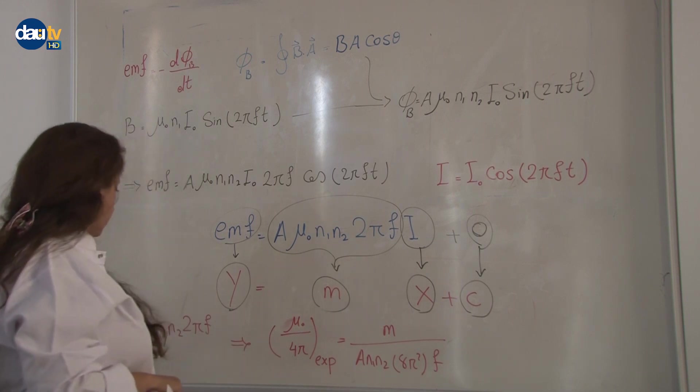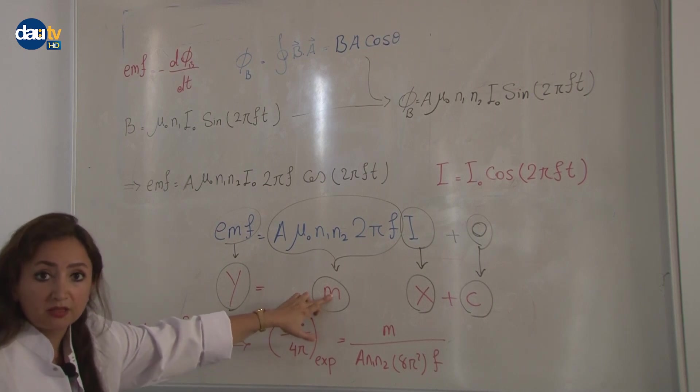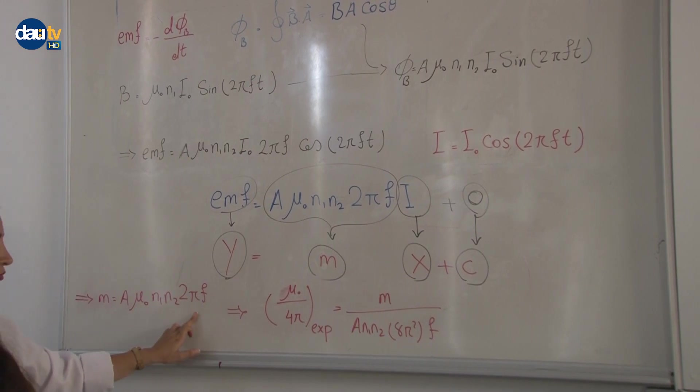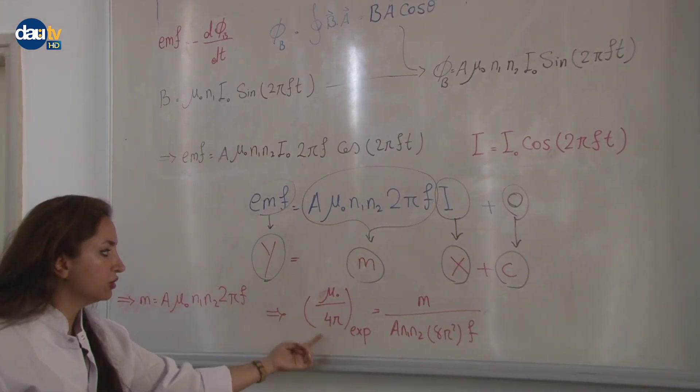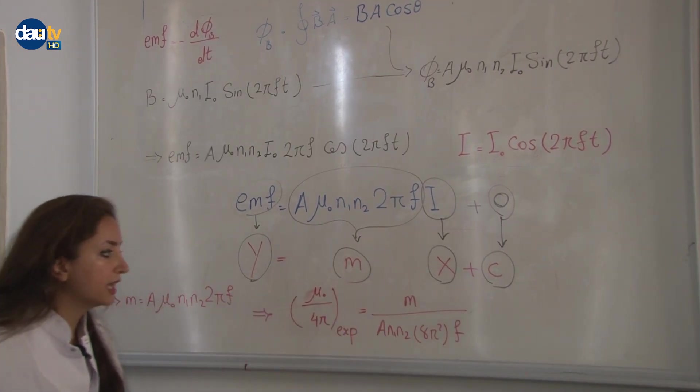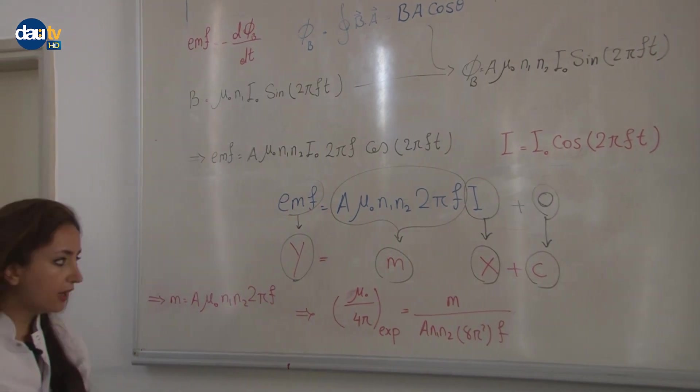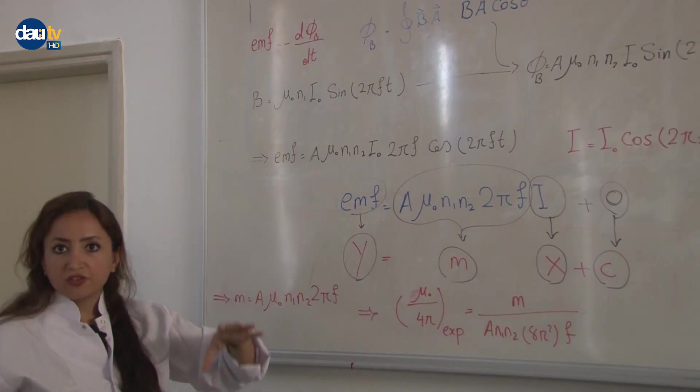If I put m as slope, m equals A mu zero N1 N2 2 pi f. After arranging our equation, I can define mu zero over 4 pi as slope over A N1 N2 8 pi square f. Now we are looking for this equation. After we define our data, after our measurement,